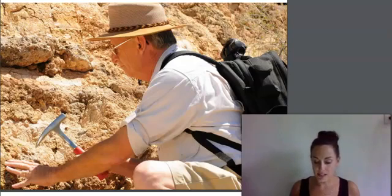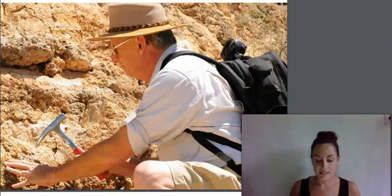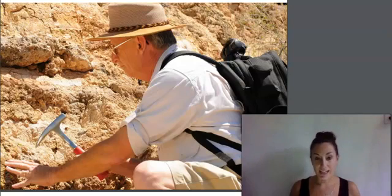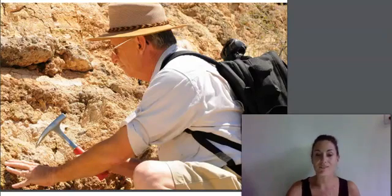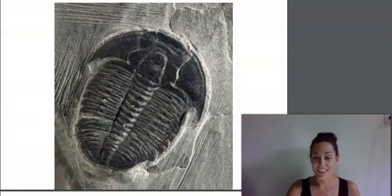Paleontologists can determine when the animals and plants imprinted in the fossils lived, based on the rock layers in which they were found. They use information from all fossils to create a timeline of life on earth. Today I would like to show you several different fossils from different time periods during the history of the earth.